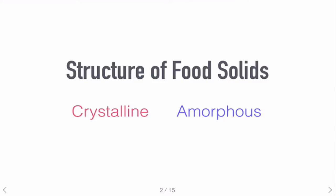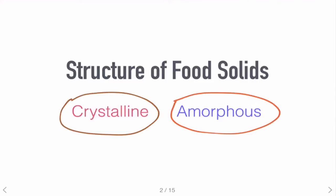Let's look at the structure of food solids. In general, most dry food or low moisture food can exist in the form of crystalline or in the form of amorphous state. Thermodynamically, the crystalline form is at the lowest energy level, or in a stable equilibrium state.